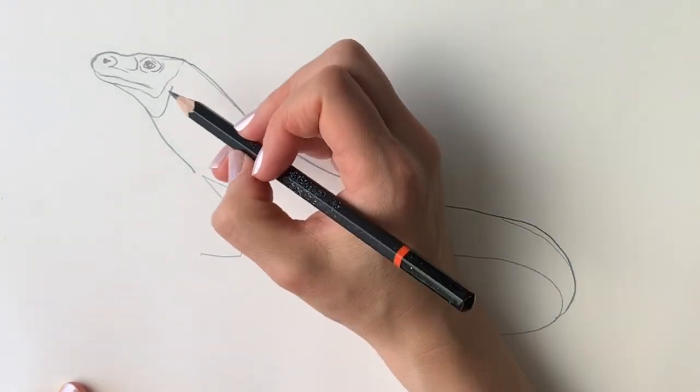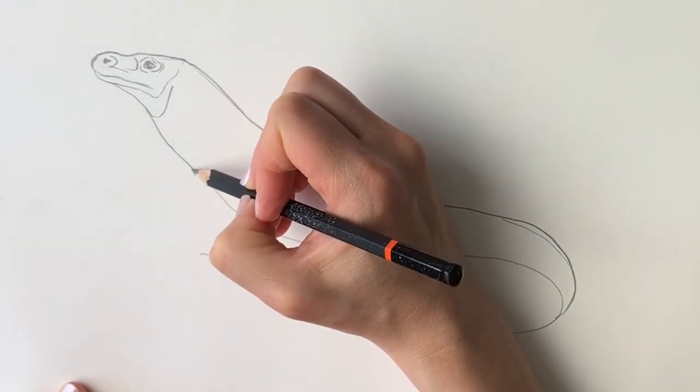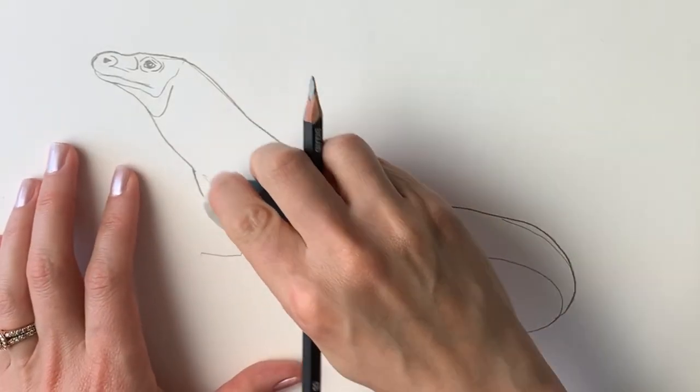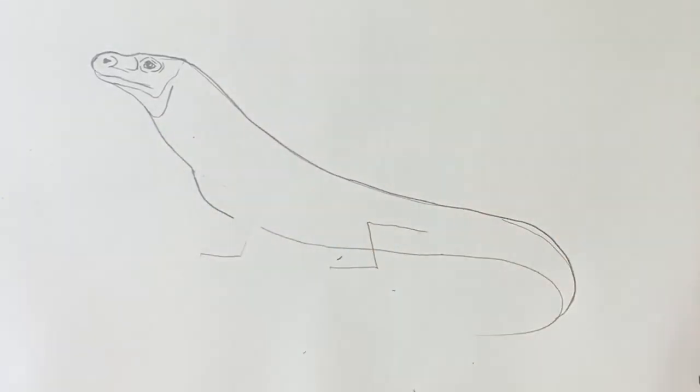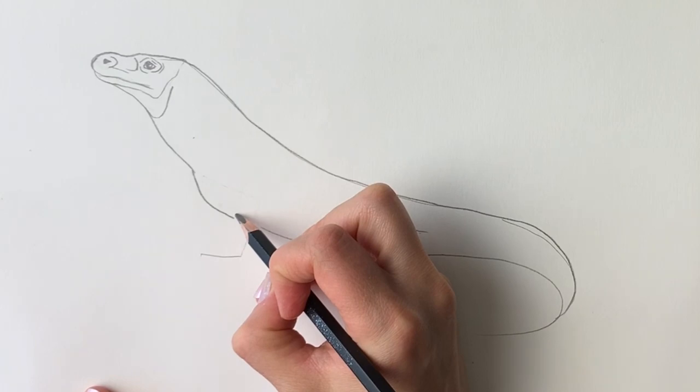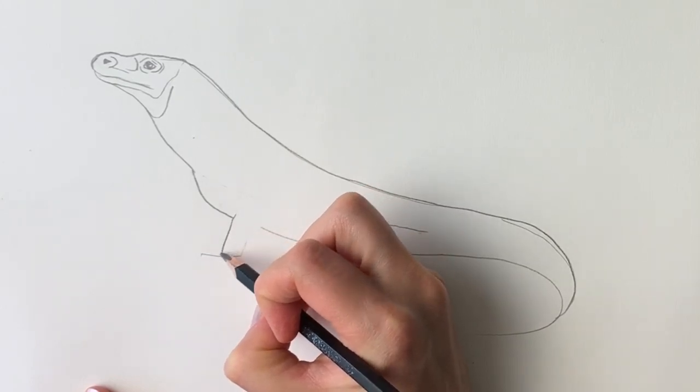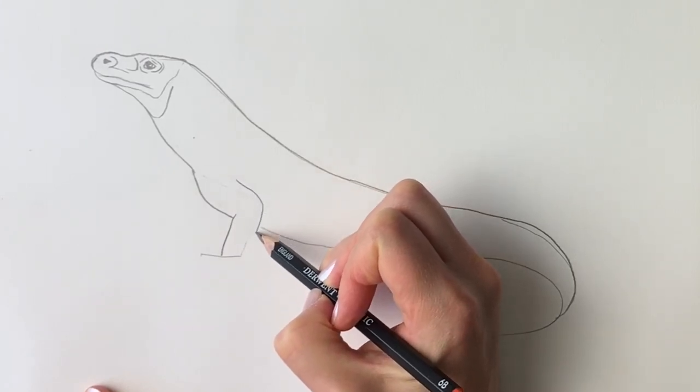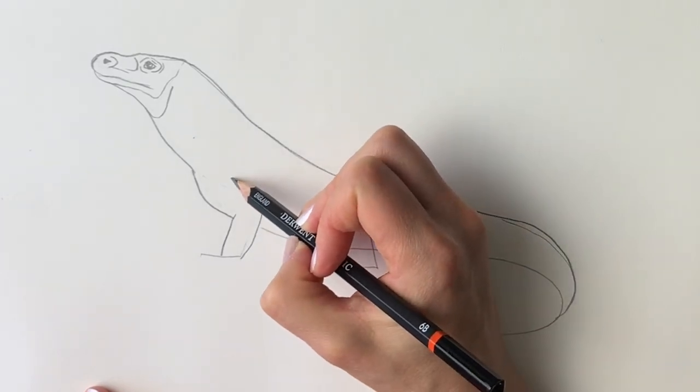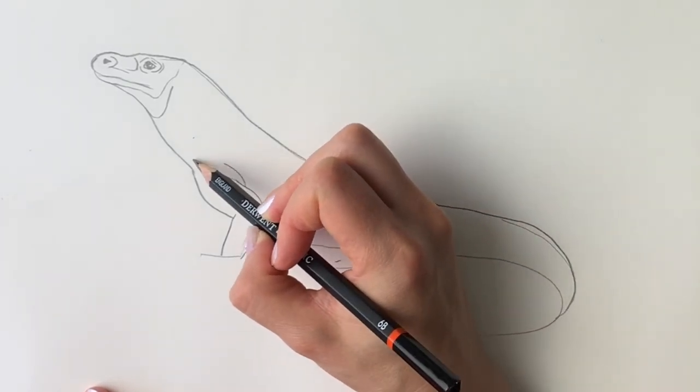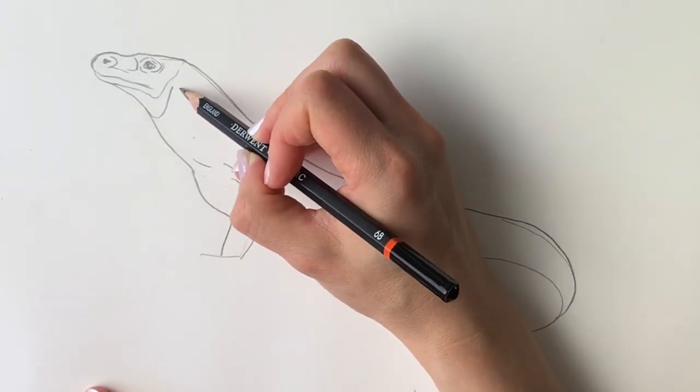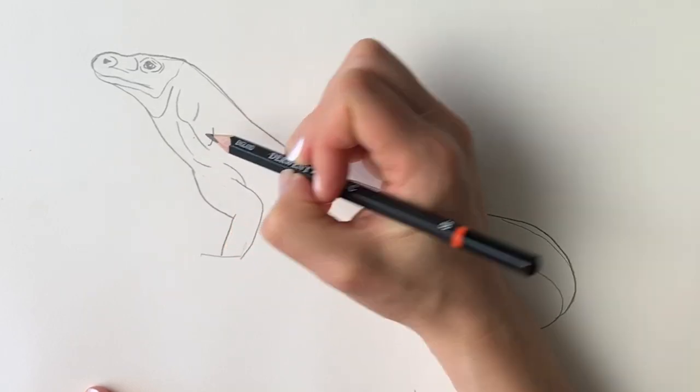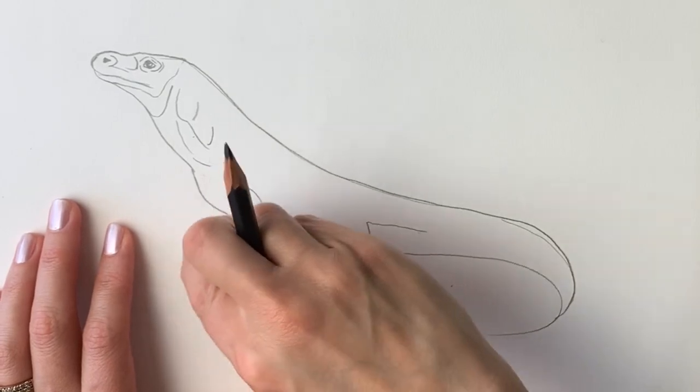And then we're going to carry on doing some more of the underbelly and the neck. So carry it on round. And then erase out the guidelines for the leg, but remember just enough so that we can still see them so that we can still use them. I'm going to start the leg. And then the back of the leg, just bring it round. And a few more folds. These Komodo Dragons are super wrinkly. So just keep on adding all these different folds all around. They don't have to be exactly the same as mine, just as long as you've got a few.